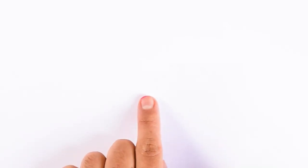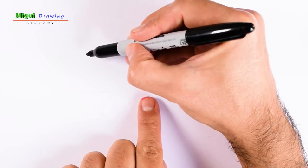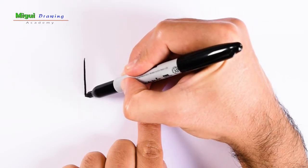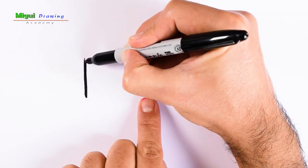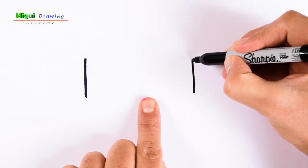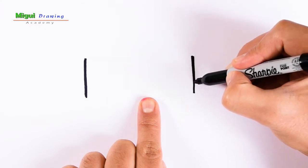The first step is to make two lateral lines about the same height, then a circular shape at the bottom.